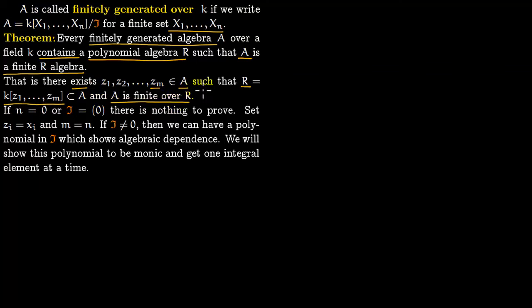If n is 0, there is nothing else to do — you set R also as K and you are done. Or if the ideal is 0 then A is K[x1,...,xn] and there is nothing to prove; you set each zi equal to xi and set m equal to n, so R itself is K[x1,...,xn]. The only interesting case is when the ideal is non-zero.